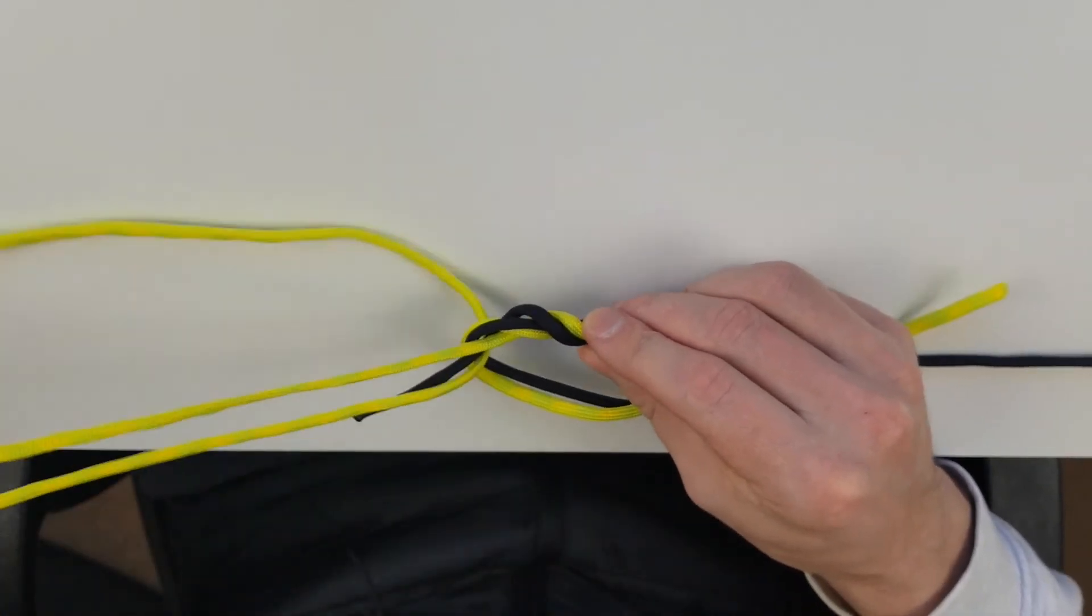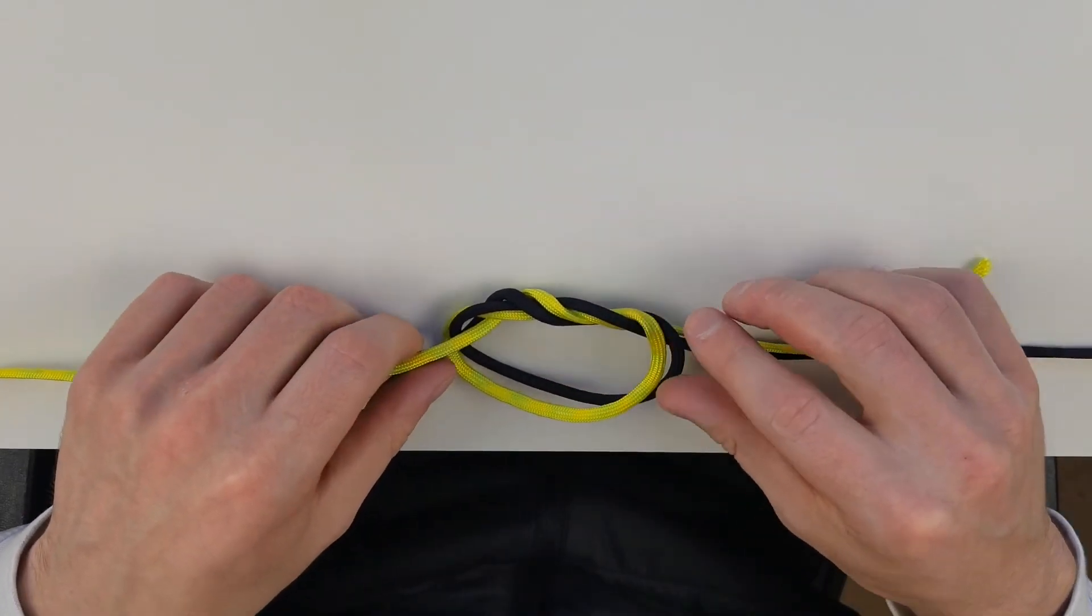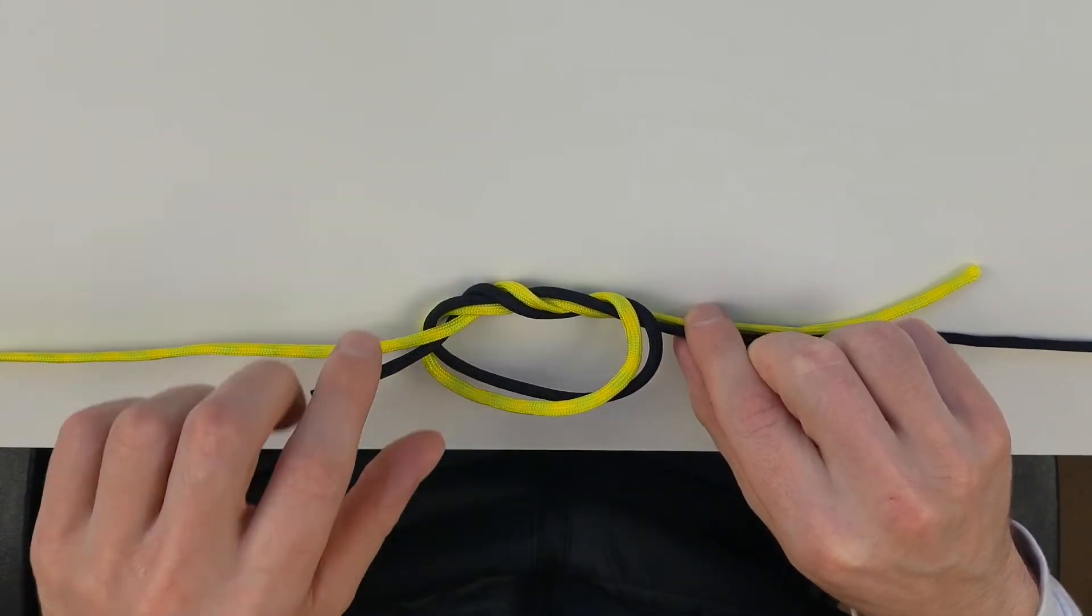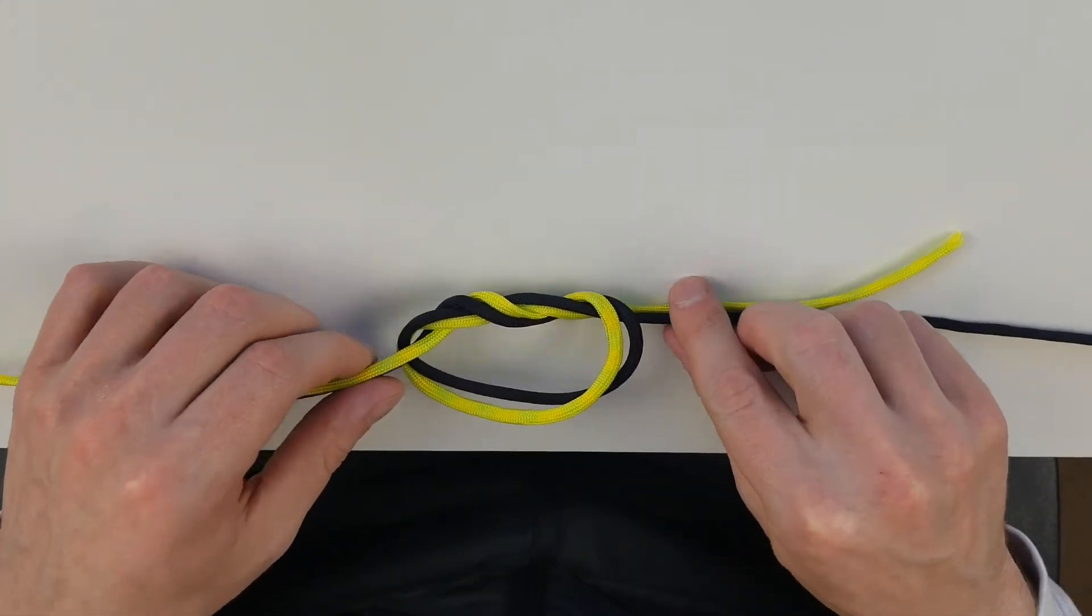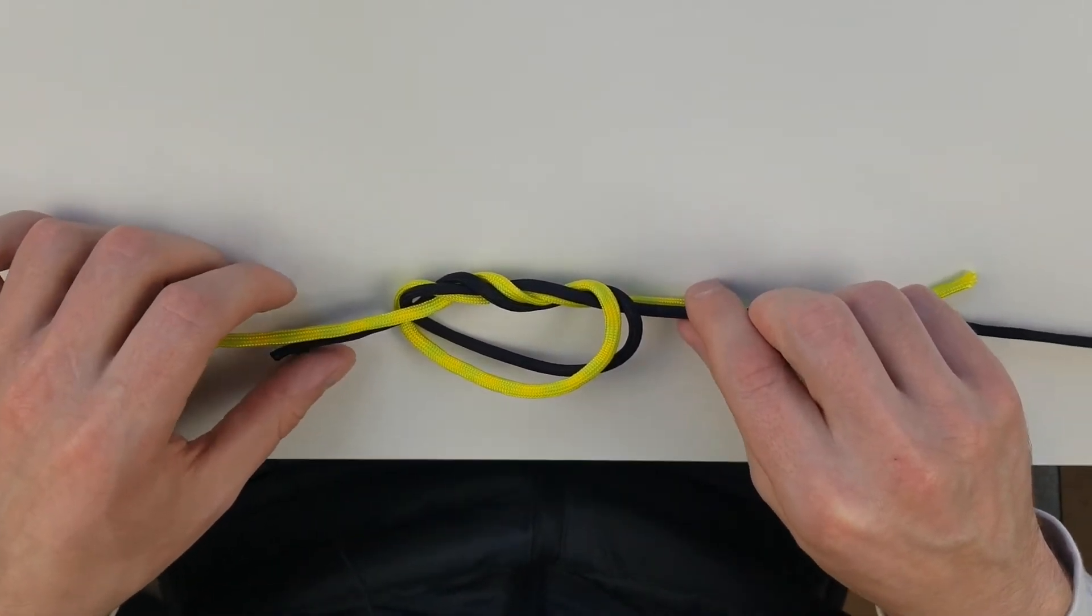All we got to do now is grab all four strands of line - one, two, three, four - and we got to slowly start pulling them tight. That's going to be our knot.